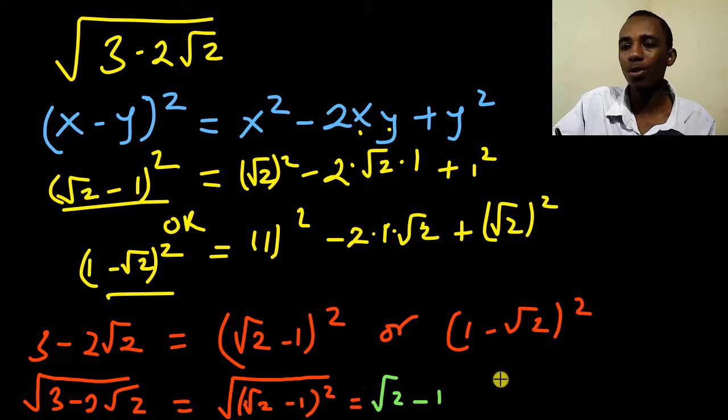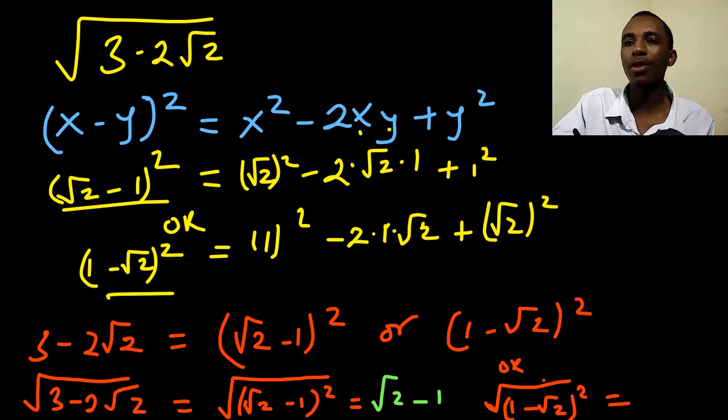Or the other possibility is going to be the square root of 1 minus root 2 squared. So the square root and the square cancel out and we have 1 minus root 2.